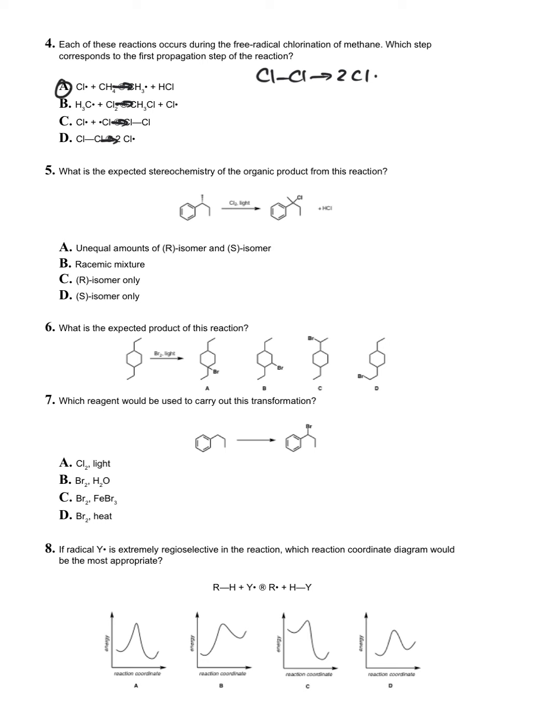Question five: what is the expected stereochemistry of the organic product from this reaction? You're starting with a compound that has a stereocenter, and you're generating a benzylic radical. Remember, the benzylic carbon is the one bonded to the benzene ring. That's achiral, and as a fact of that, the chlorination can happen from either lobe of the P orbital, so you get a racemic mixture.